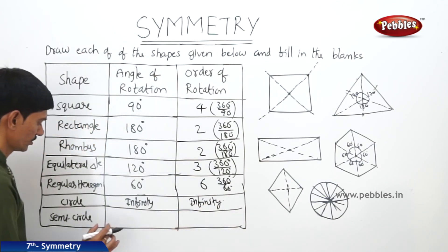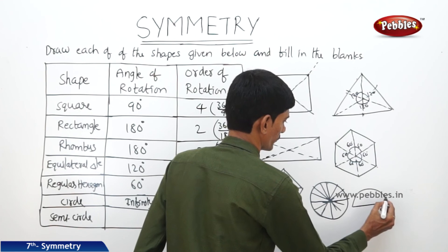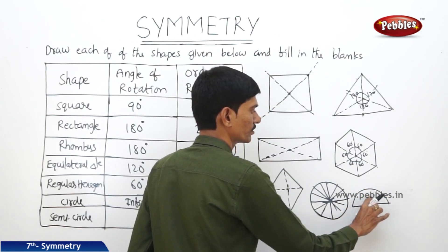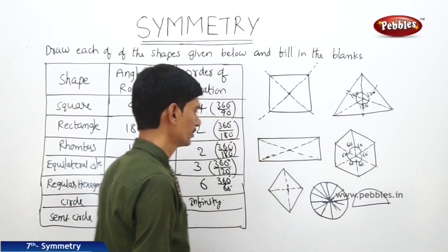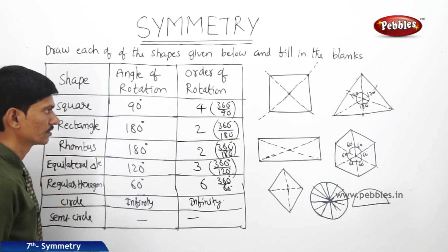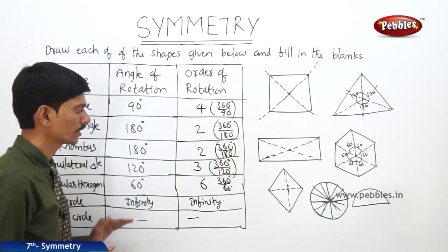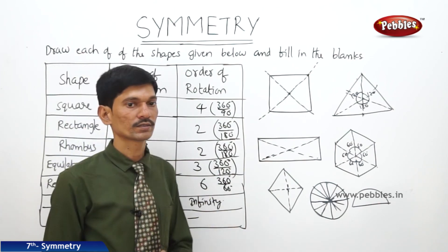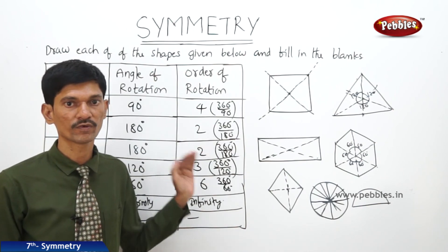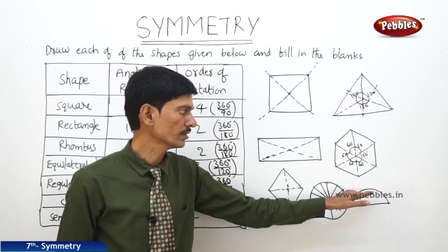Now for the semicircle, if you rotate it through 360 degrees, then only will you get back its original position. So we do not consider that it has rotational symmetry. That is why we do not write its angle of rotation or order of rotation. A figure has rotational symmetry only when the order is more than one, but a semicircle has a rotational symmetry of order only one.